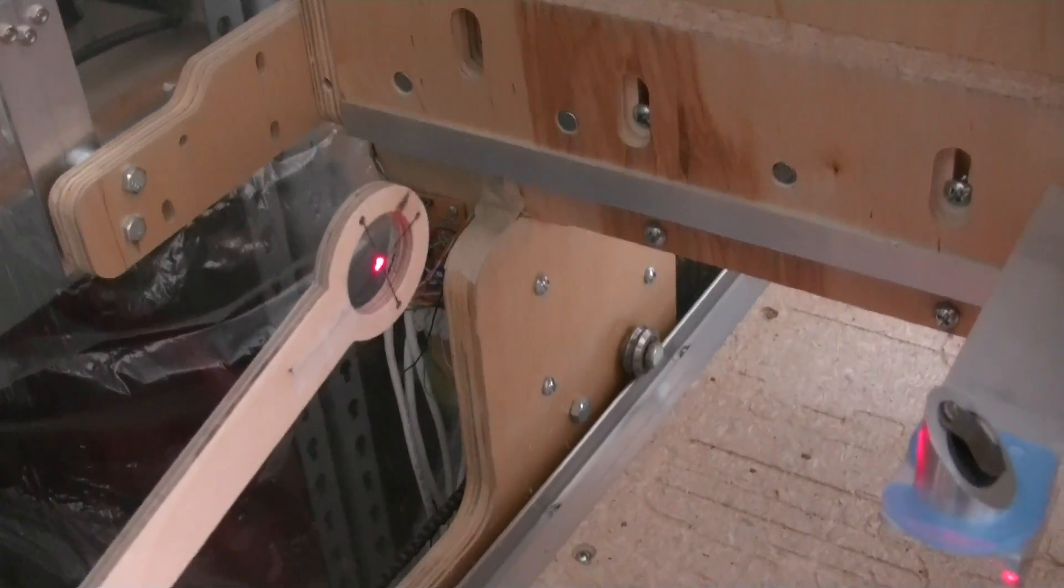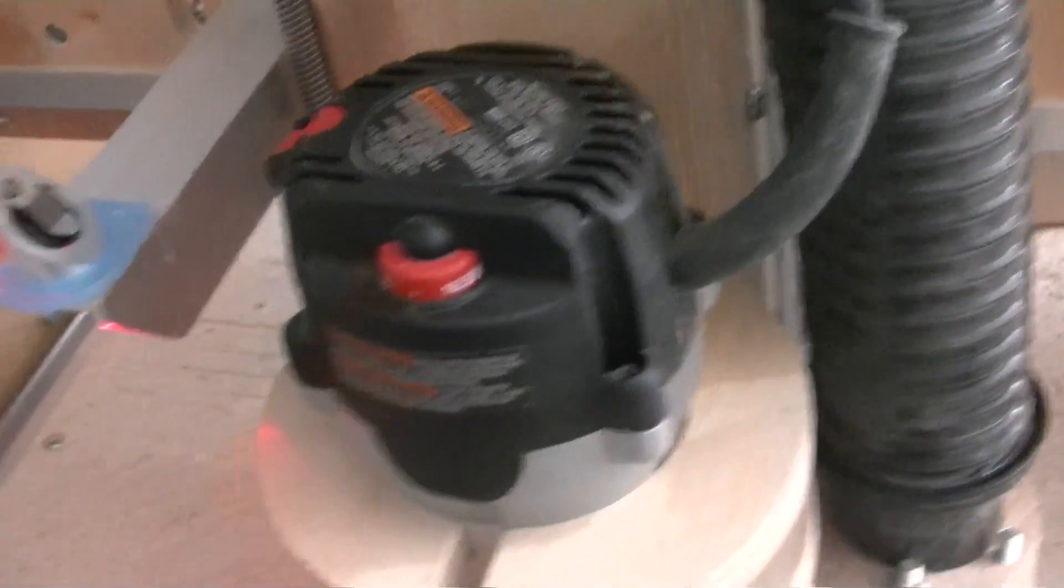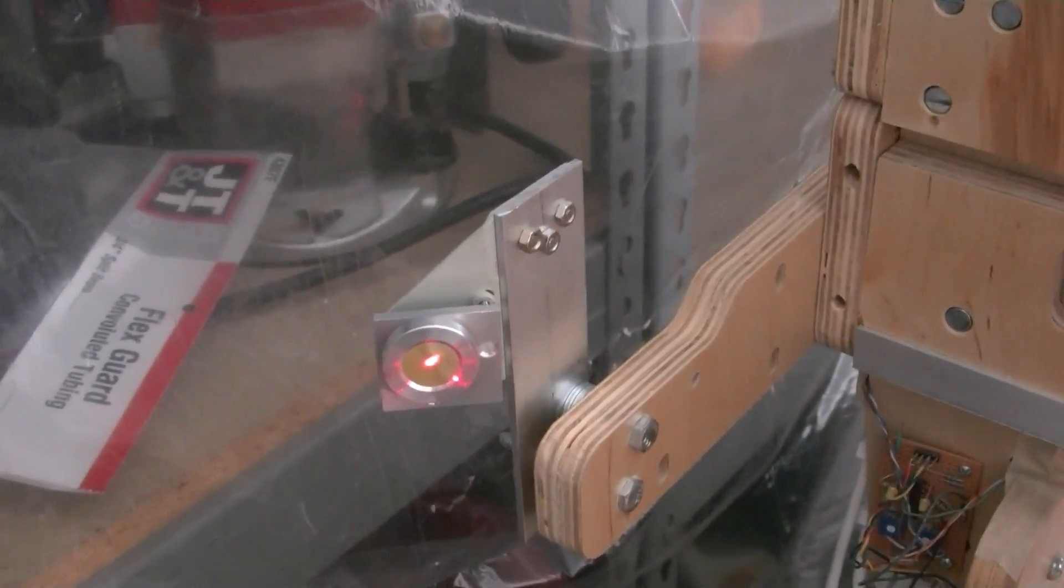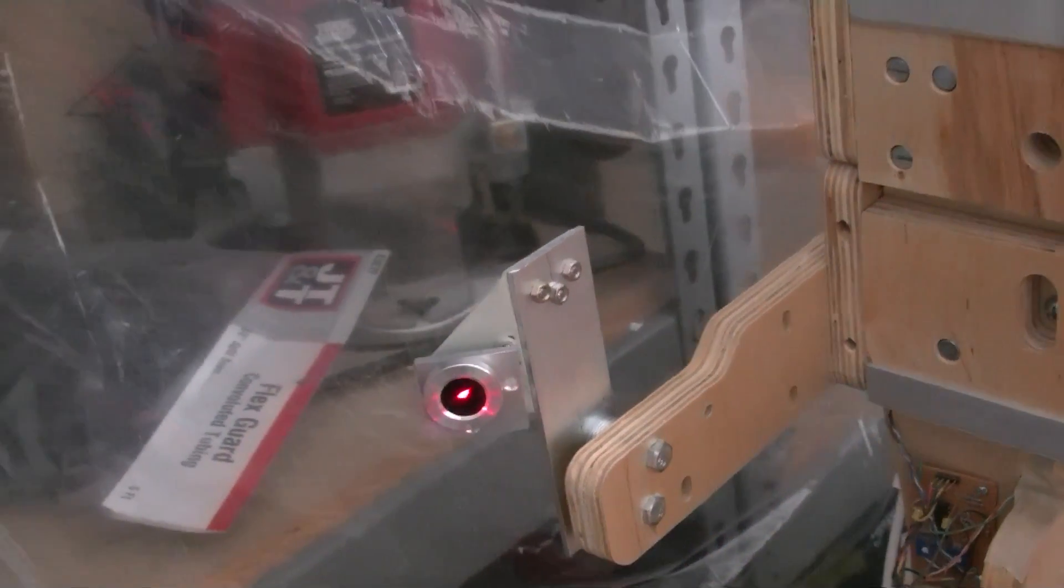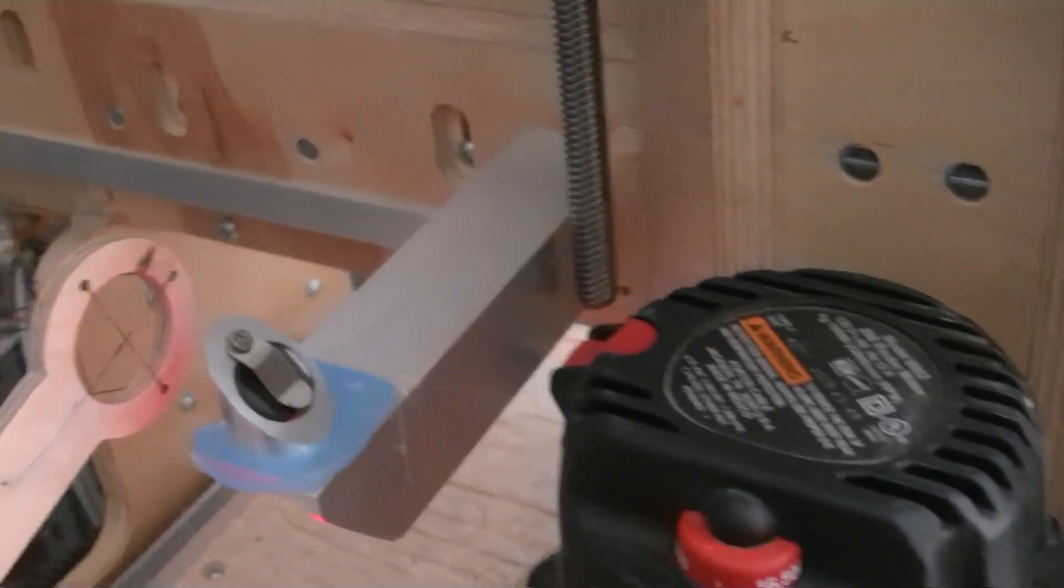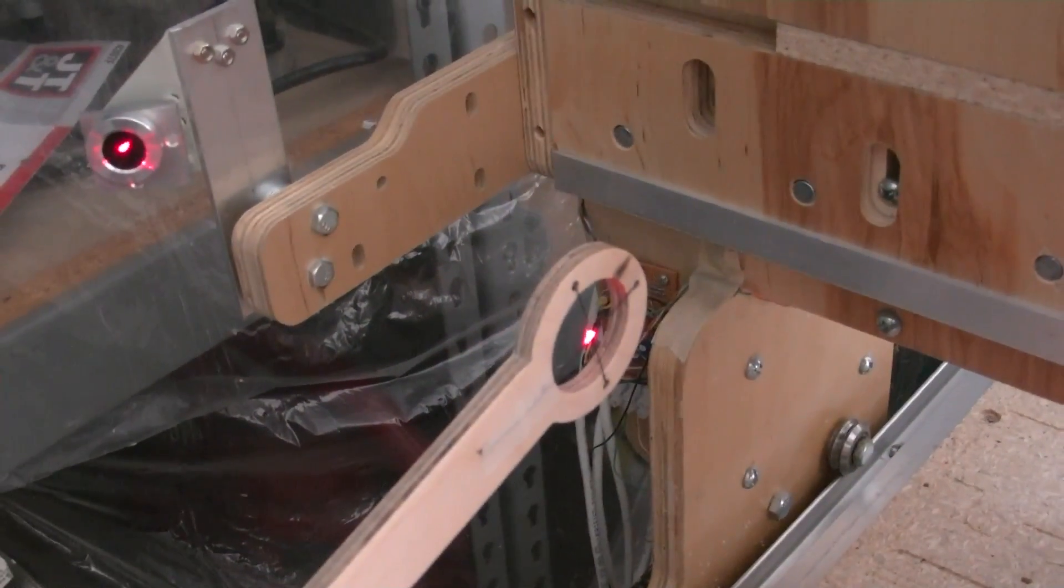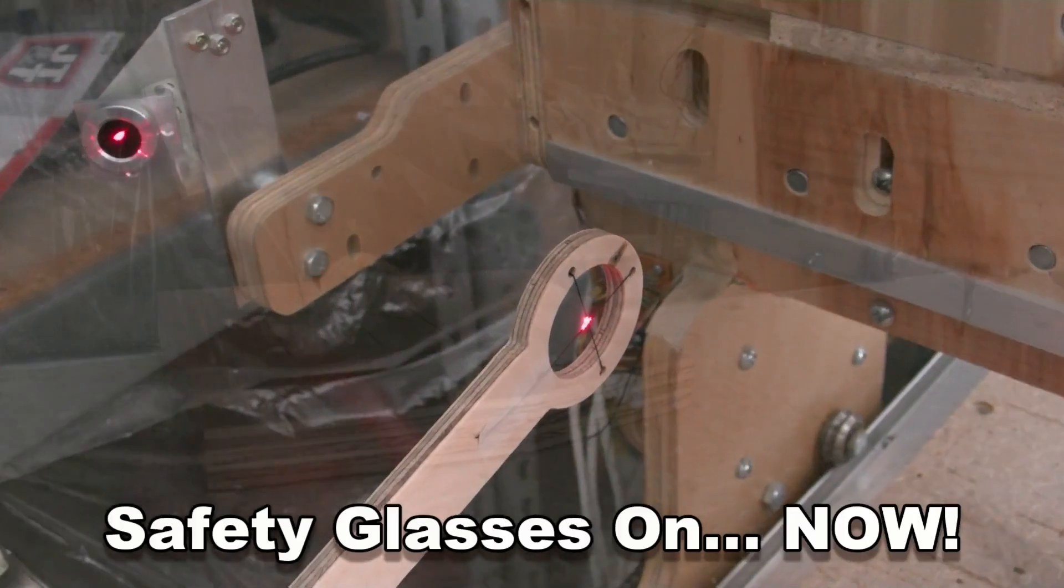You move it along closer to your destination and there you would adjust the bounce mirrors by altering the screws. So by going backwards and forwards eventually you reach a point where you've got your beam path parallel.